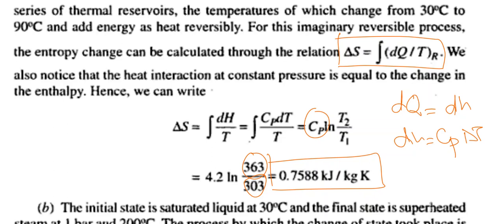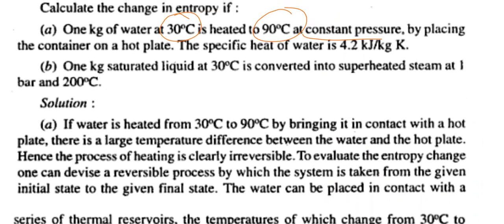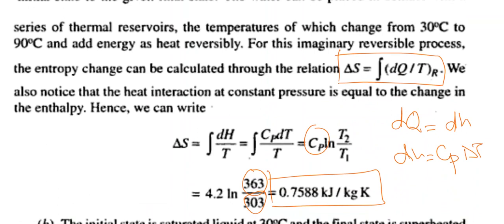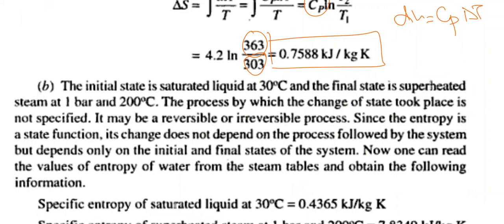This entropy change was found using the ideal gas equations. You can also verify it using steam tables by looking up the entropy at 30 degrees centigrade and at 90 degrees centigrade and comparing those values. Now moving to Part B: the initial state is saturated liquid at 30 degrees centigrade and the final state is superheated steam at 1 bar and 200 degrees centigrade.